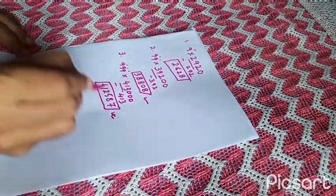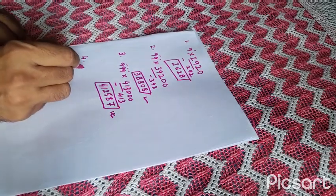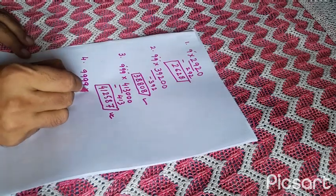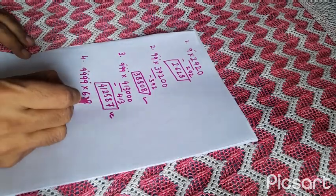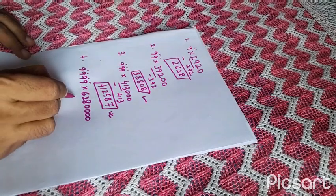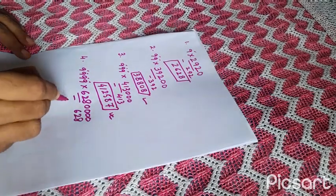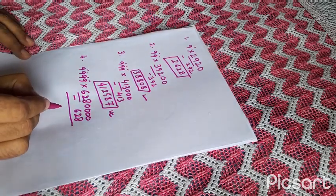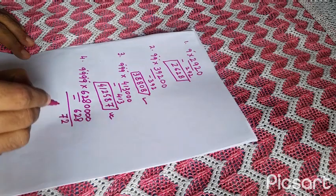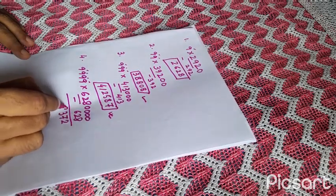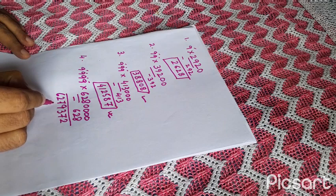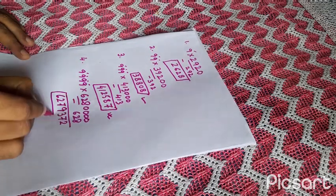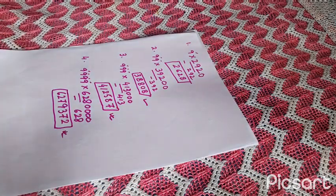In the same way, let us suppose 4 nines into 628 we have to multiply. Then for 4 nines we'll put four zeros and we'll deduct this number from that: 628. If we deduct what we'll get: 2, 7, 3, 9, then 7, 2, 6, 6. So 279372 is the answer. In the same way we can do other multiplications.